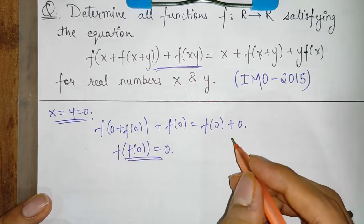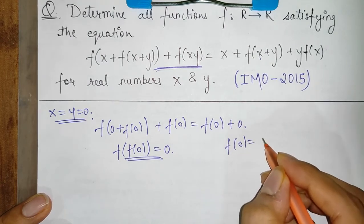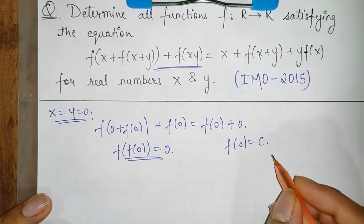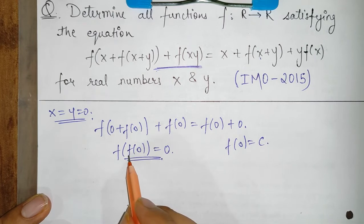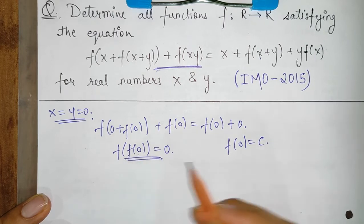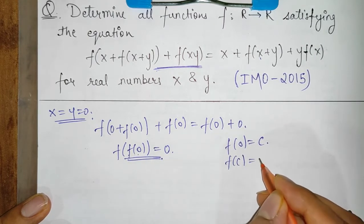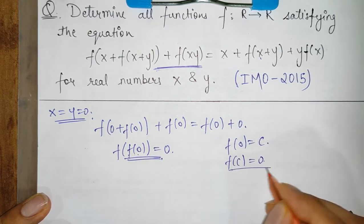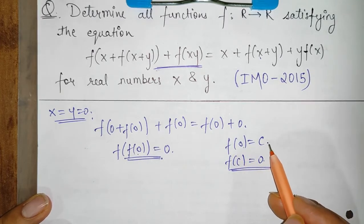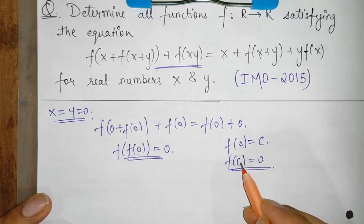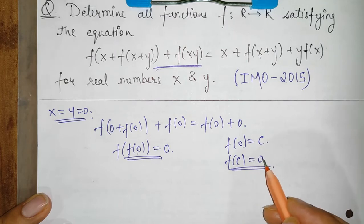Now let's say f(0) is a constant c. So if f(0) = c, then substituting gives us f(c) = 0. So we have two relations: f(0) = c and f(c) = 0.